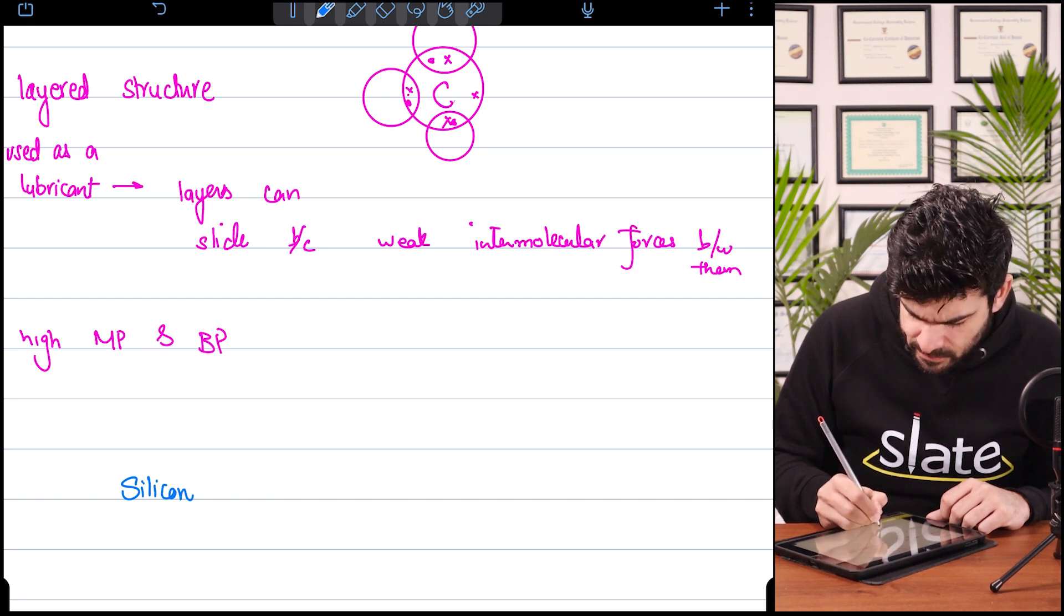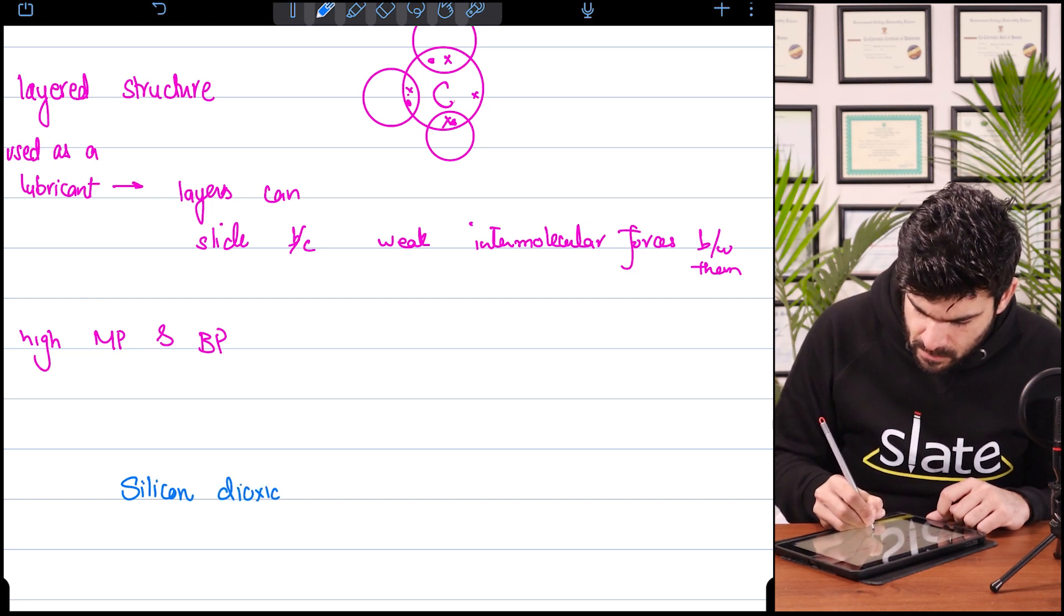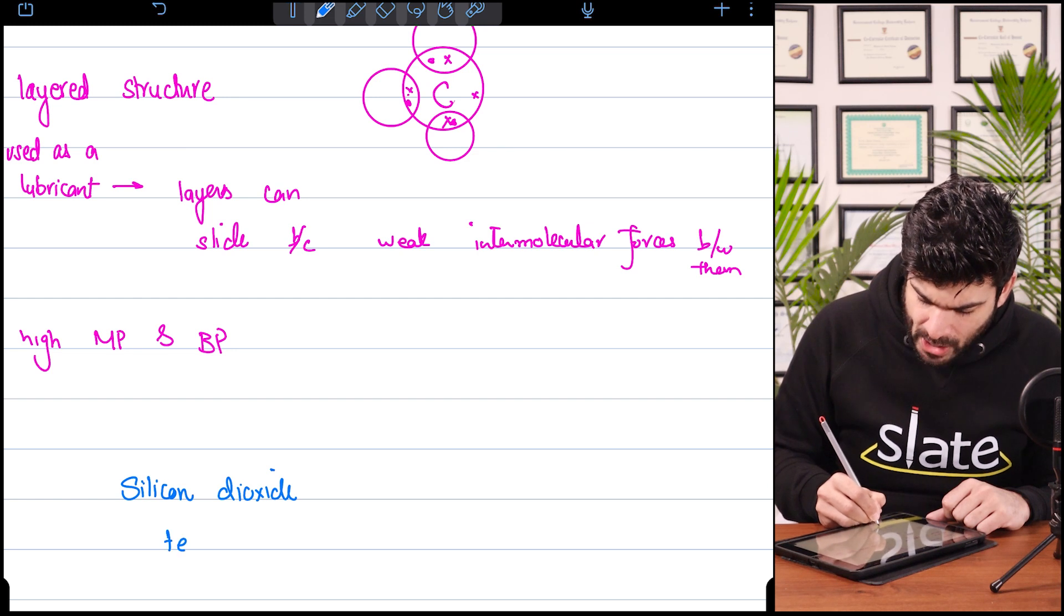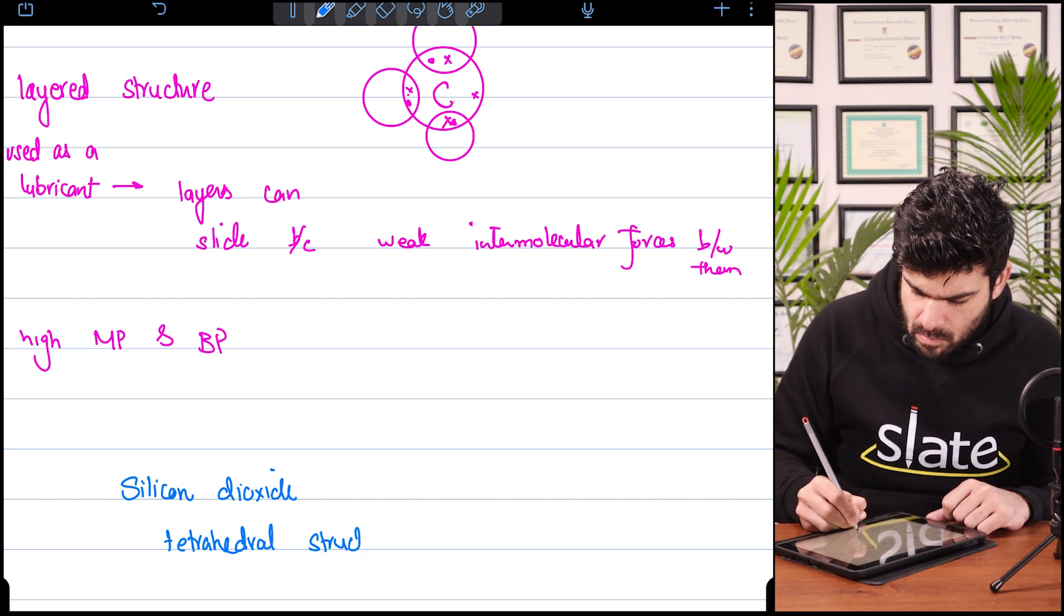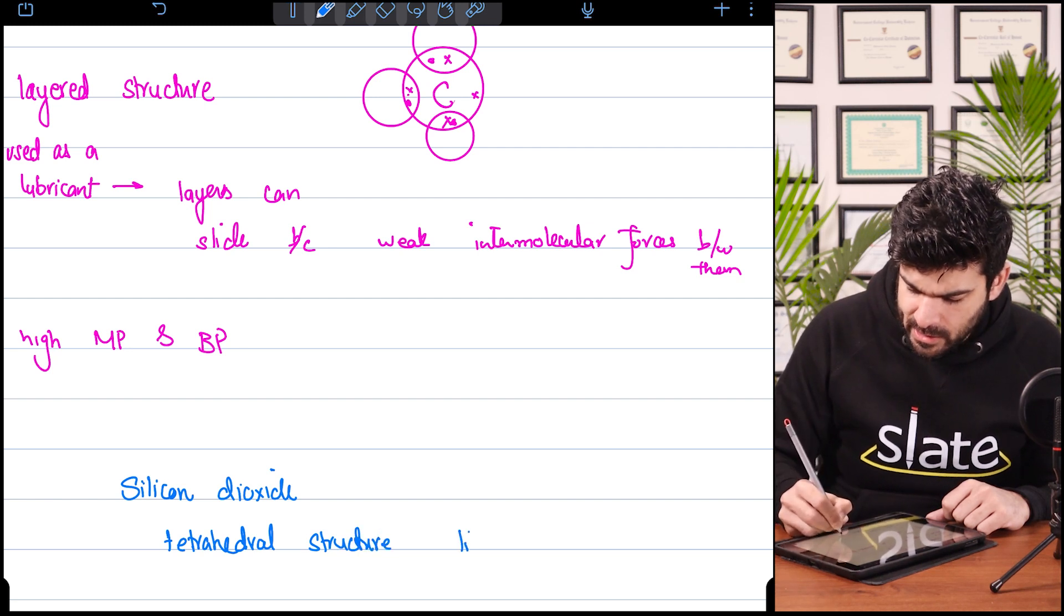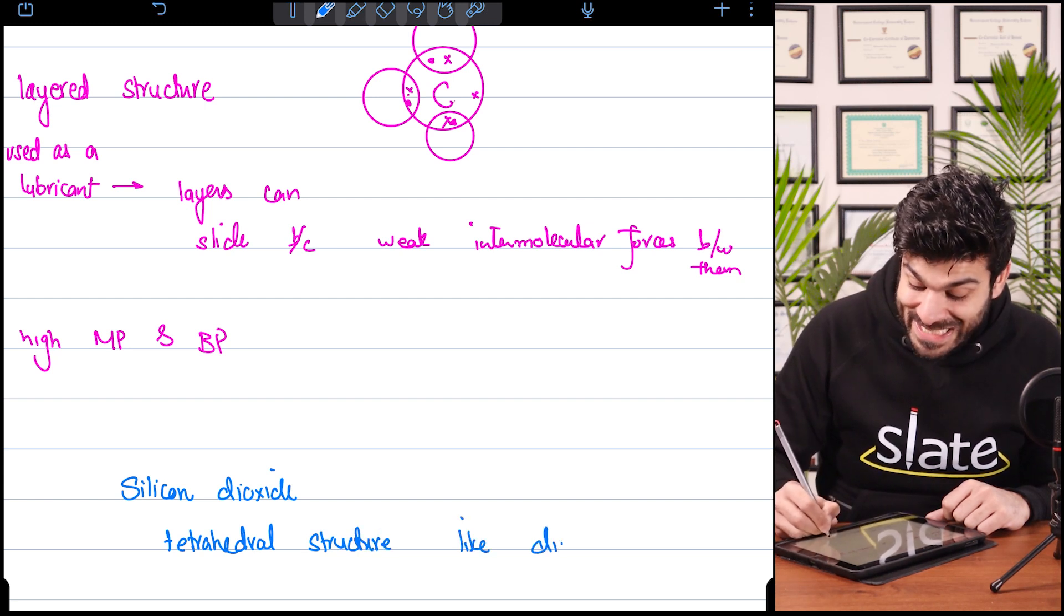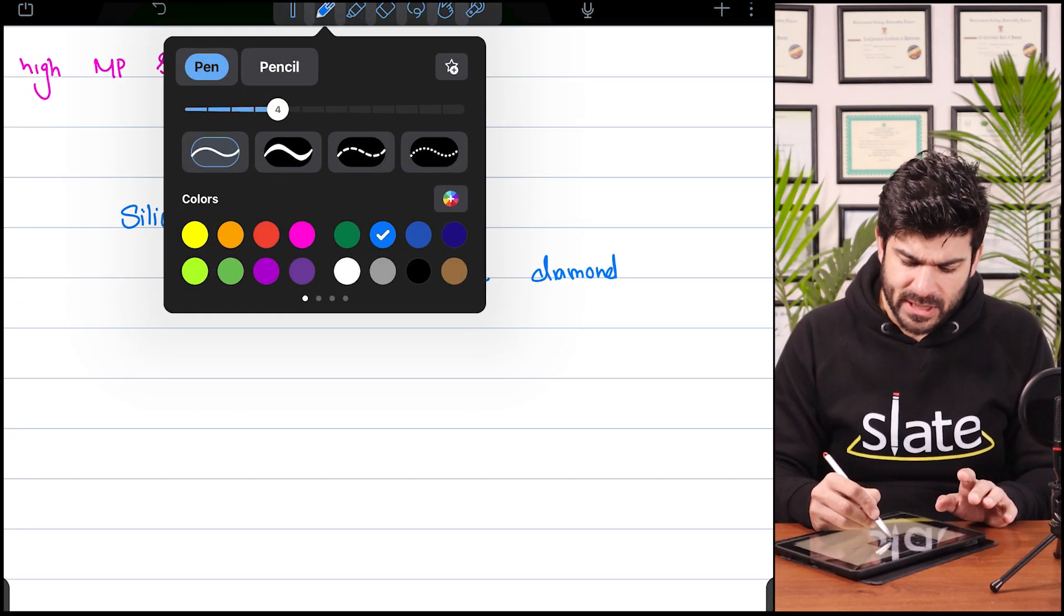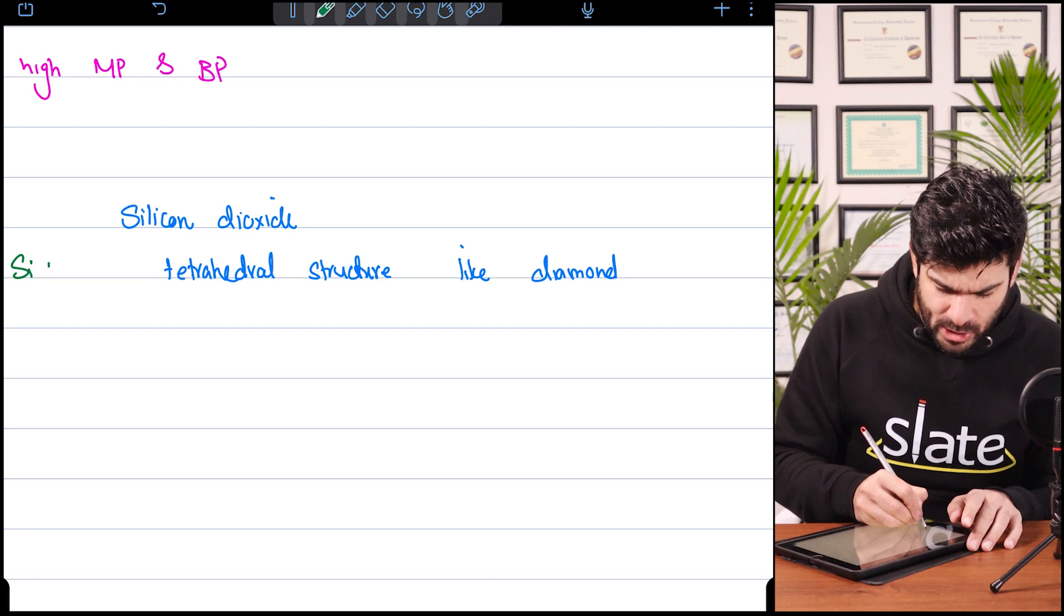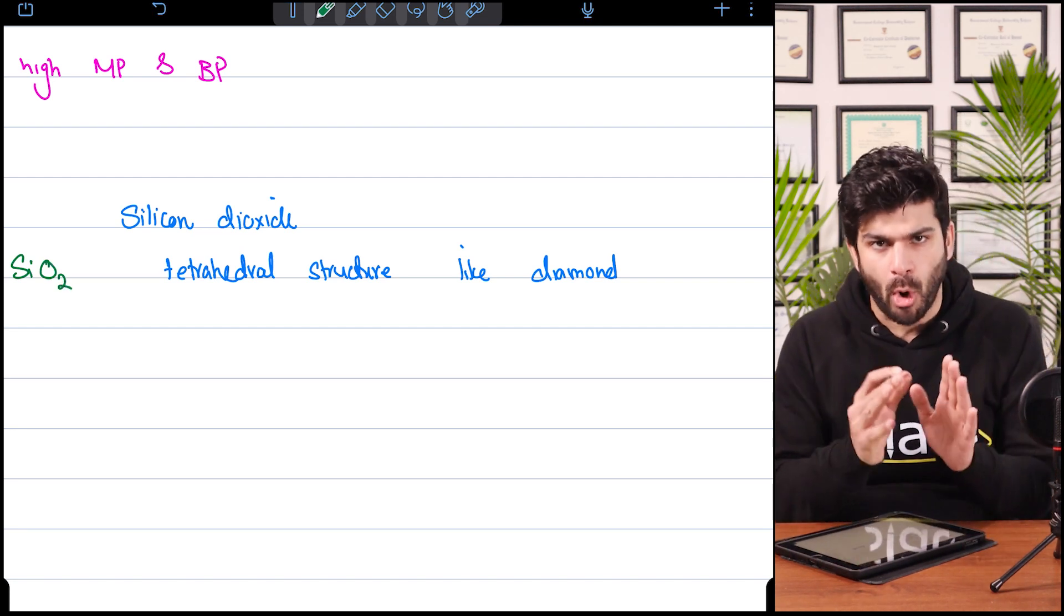Silicon dioxide. This also has a tetrahedral structure like diamond, exactly like diamond. What will happen? In the formula you see one silicon and two oxygens, but it's not bonded that way.